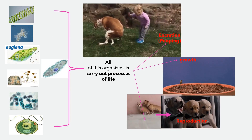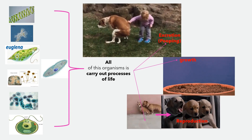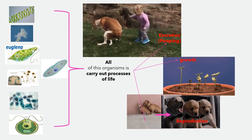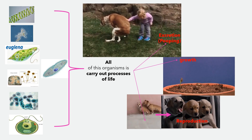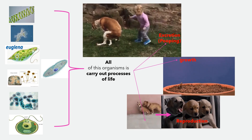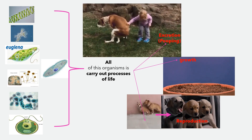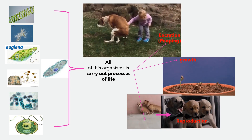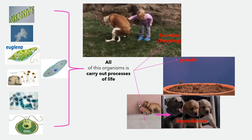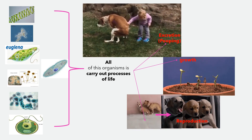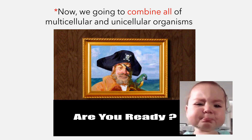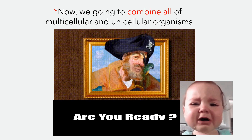All of the organisms you've learned just now carry out processes of life. What is a process of life? Processes of life include things like excreting waste, growing, and reproducing. Now we're going to combine all of the multicellular and unicellular organisms.